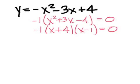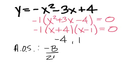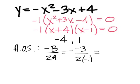What are the zeros for this? Negative 4 and 1. The axis of symmetry is negative b over 2a. So that's negative 3 over 2 times negative 1, which gives us 3 over negative 2. So it would all be negative 1 and 1 half.